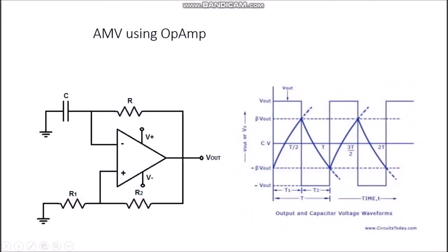In this circuit, when there is a positive feedback, there should be an alarm in our mind that it will be an application of a Schmitt trigger, or it will be some oscillator or some multivibrator. Here it is used as an astable multivibrator, as there is a capacitor. In an astable multivibrator, the output either remains high or low and both states are quasi-stable states.